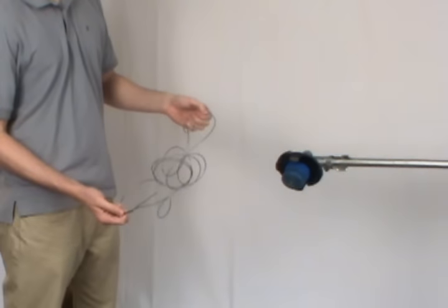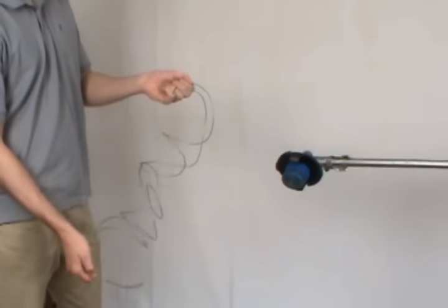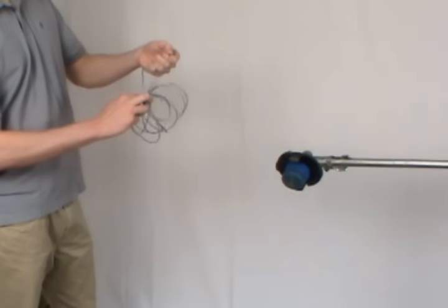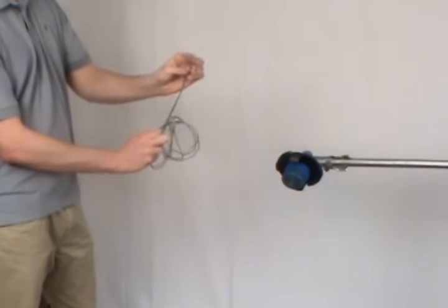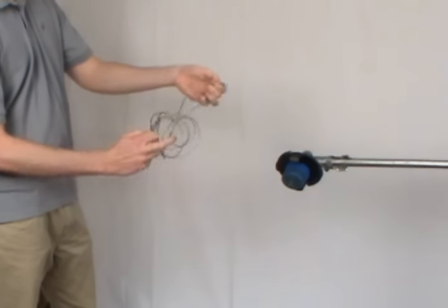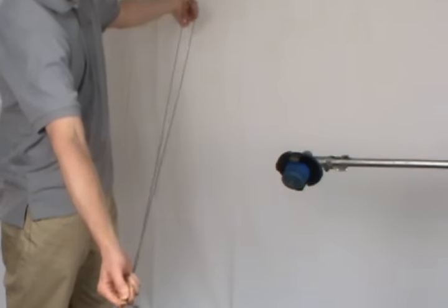Since this is a dual line trimmer head, you want to take a new line and find the center point. Then make a loop. That way you have two even ends.